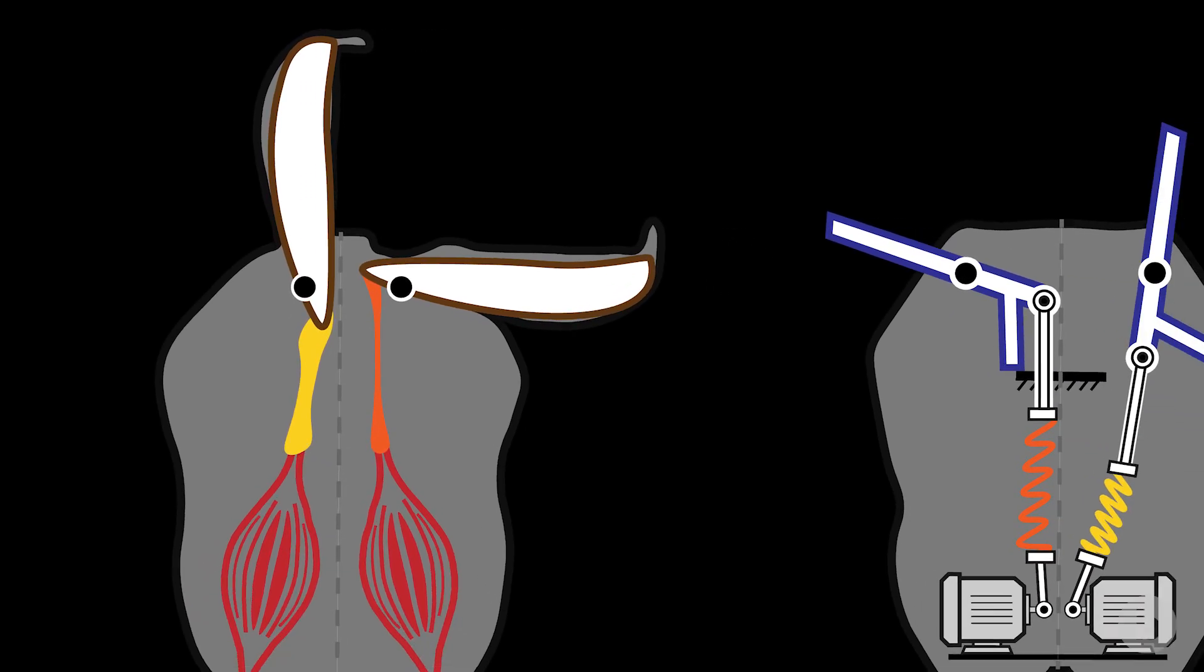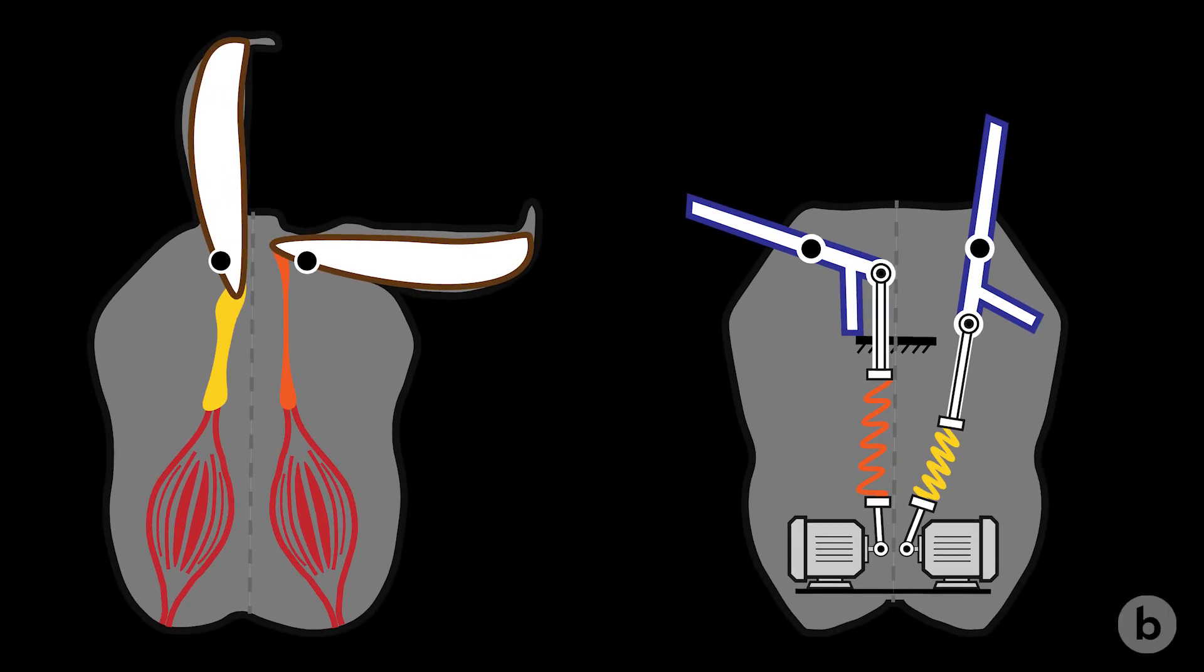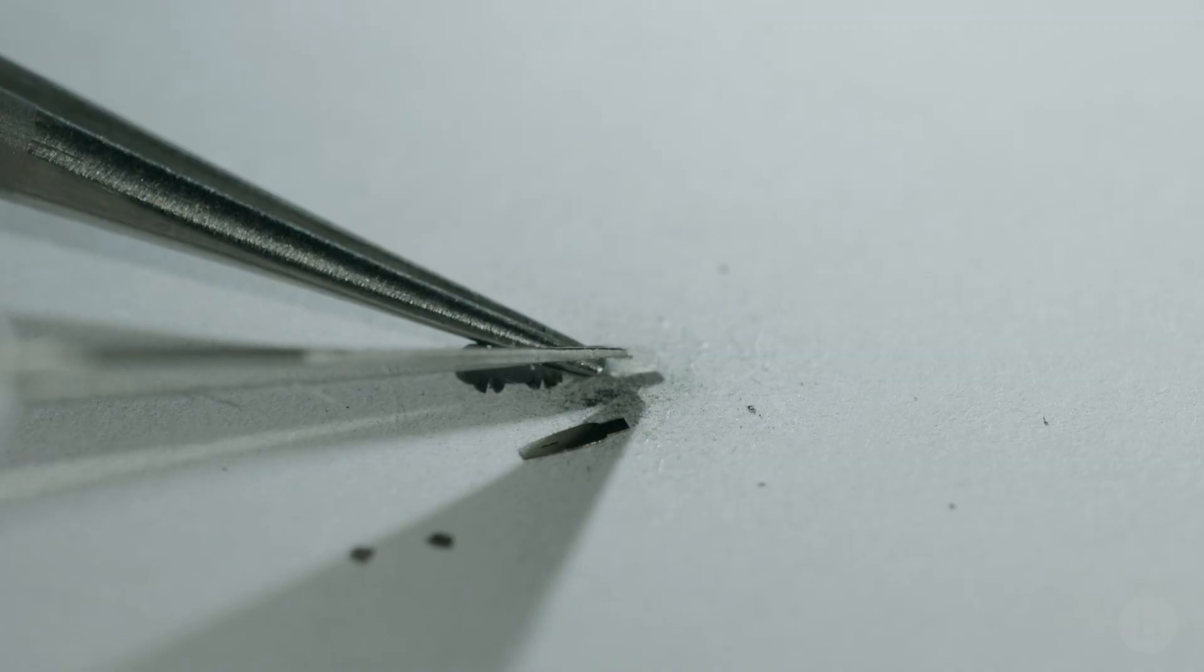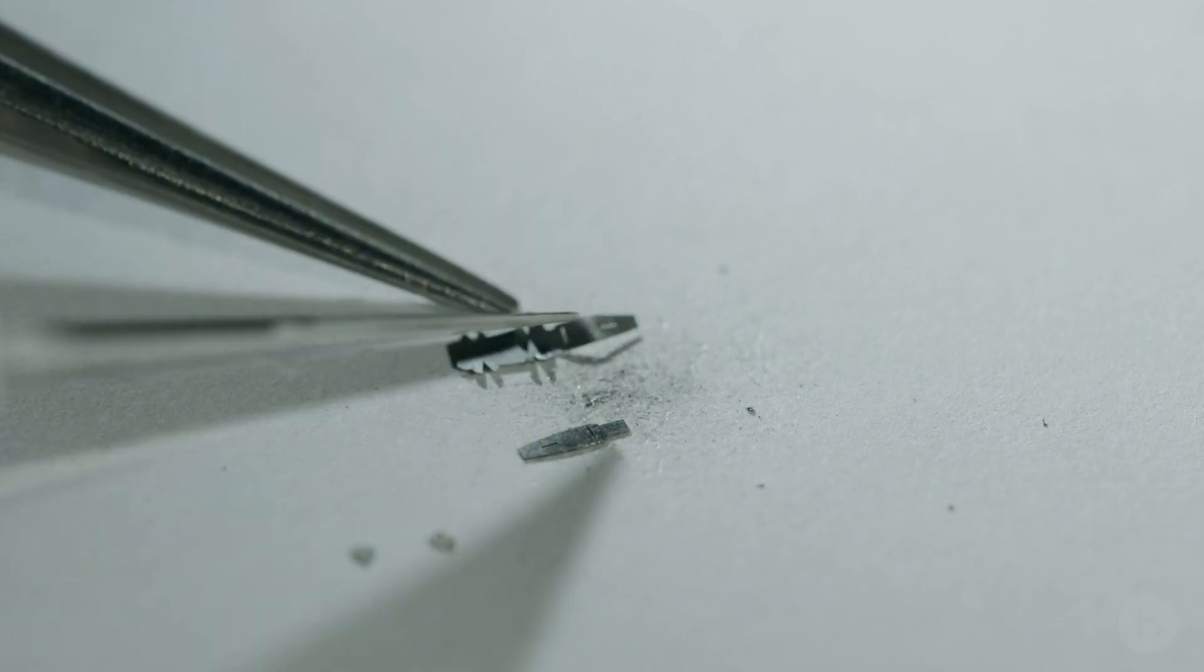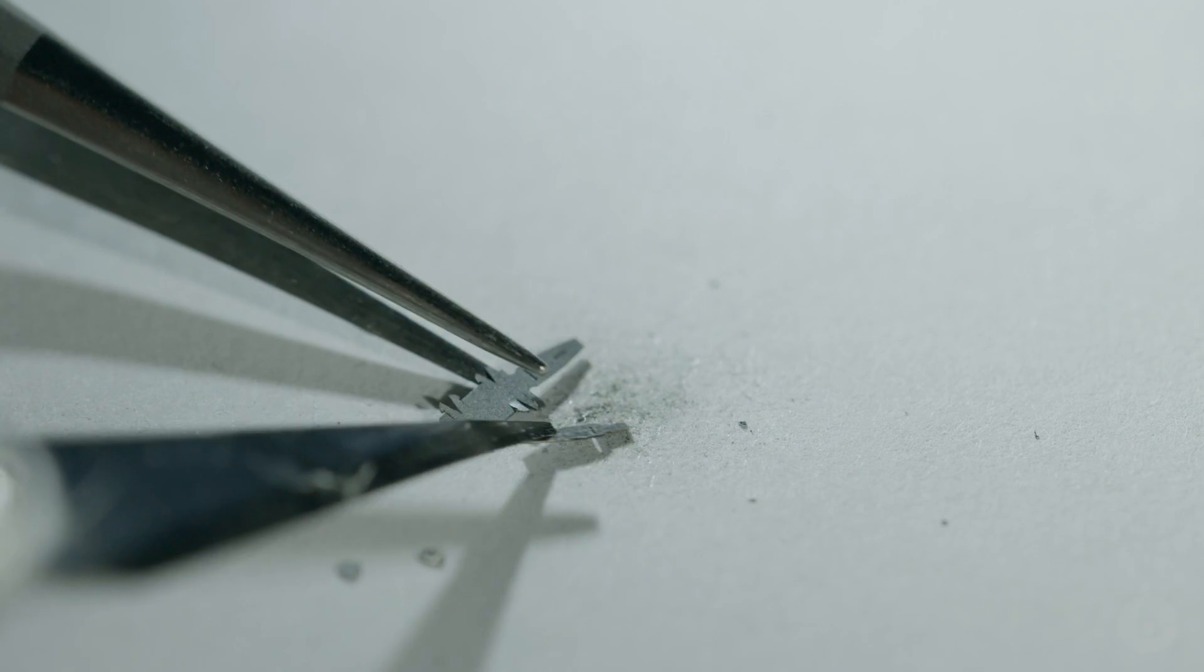In order to manufacture robots that small, we cannot use screws, we cannot use nuts, bolts. They are all out of question because they are all very big for the scale of our robots. In order to solve that problem, we use origami-inspired folding techniques to manufacture our robots.